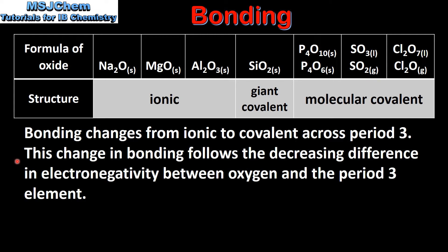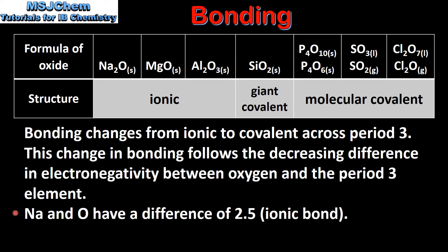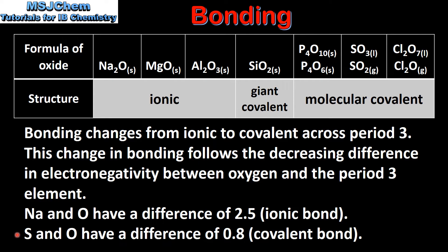This change in bonding follows the decreasing difference in electronegativity between oxygen and the period 3 element. For example, sodium and oxygen have an electronegativity difference of 2.5, which means they form an ionic bond. Sulphur and oxygen have an electronegativity difference of 0.8, which means they form a covalent bond.